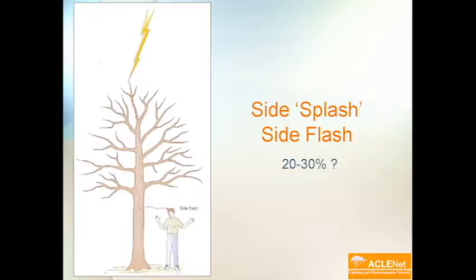Another common thing is when you're standing under a tree or close to something that's tall and you get a side splash—or side flash, some people call it. That's when lightning hits another object that's close to you and part of the current jumps across to you while the rest goes down whatever that object was. That causes probably another 15 or 20 percent of the deaths as well.